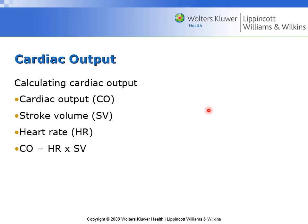In terms of measuring the effectiveness of heart functioning, you have these equations: cardiac output, stroke volume, and heart rate. Cardiac output is calculated as heart rate multiplied by stroke volume. This mathematical calculation can be used comparatively to assess if the heart is functioning properly.